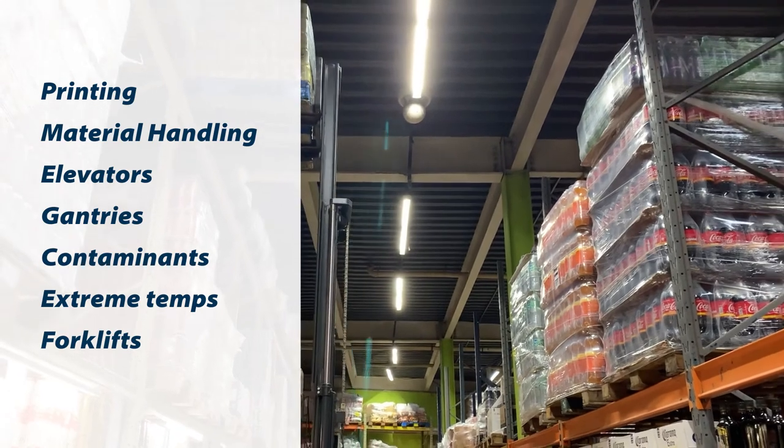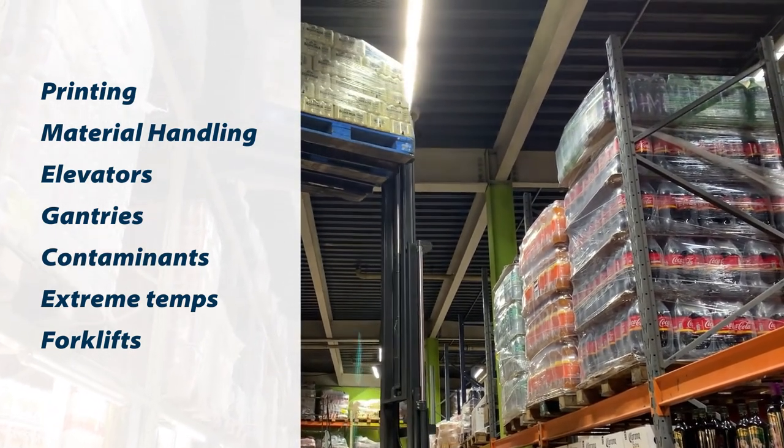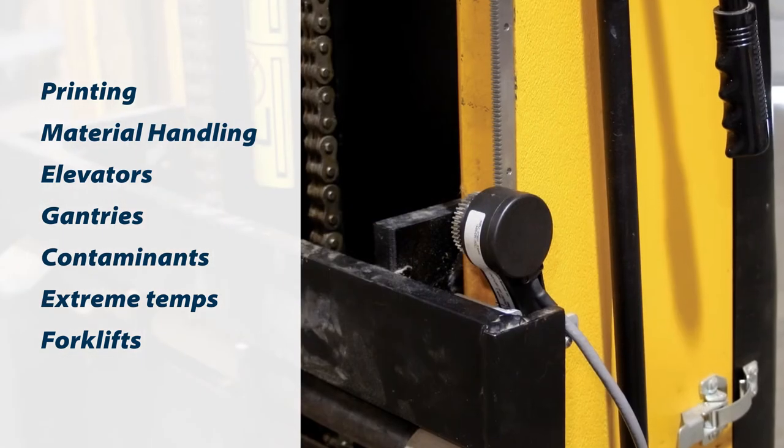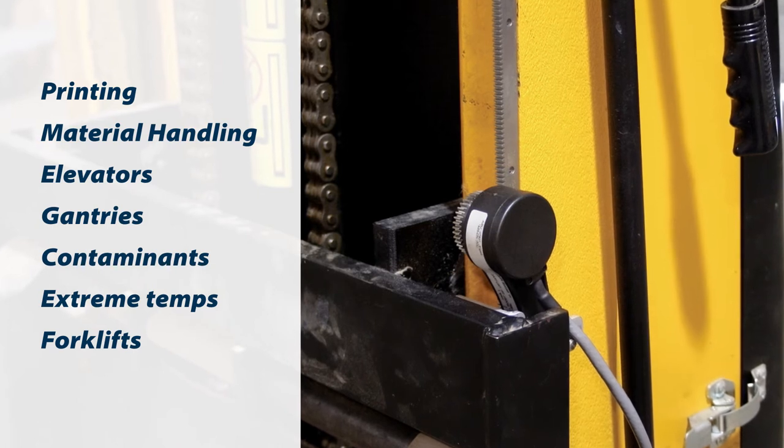Material handling also involves forklifts. If you need to know the height of the forks on your forklift, you can use a draw wire encoder versus a rack and pinion. That's very common now and you get a much more accurate position of those forks.